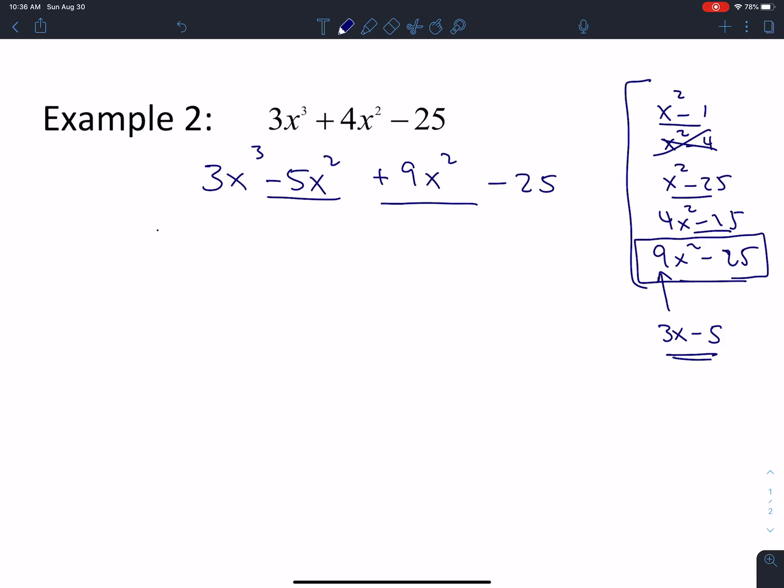In this case, we're going to factor out the x². We're left with 3x - 5, plus, in this problem, I'm going to go ahead and factor the difference of squares right away: (3x - 5)(3x + 5). And then factor out my 3x - 5, and I'm left with x² + 3x + 5, which is non-factorable.